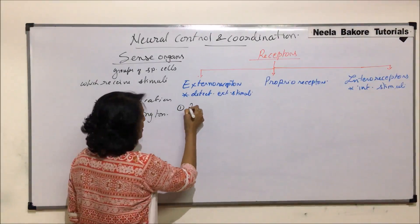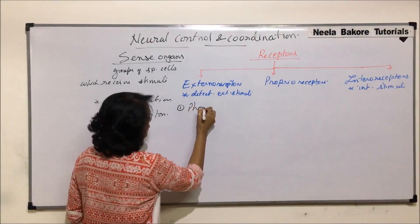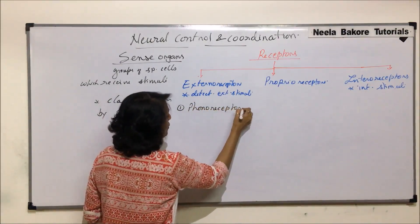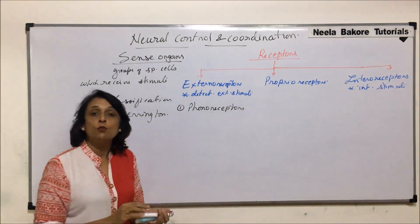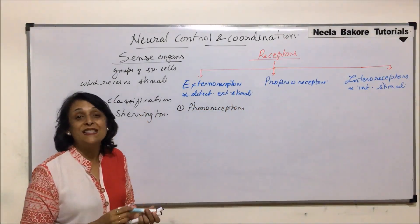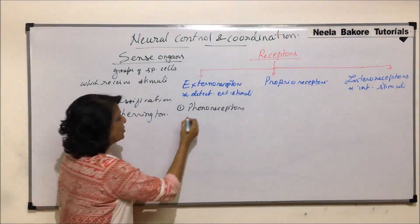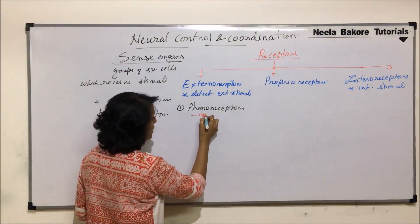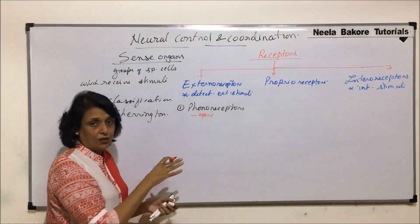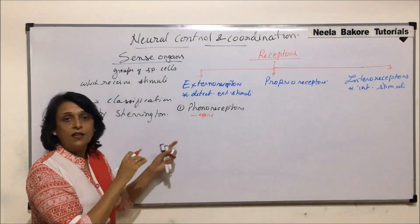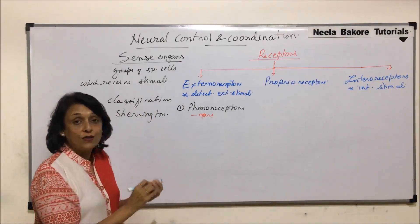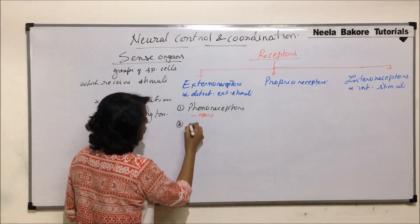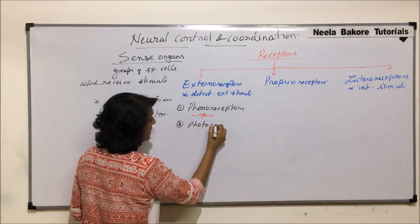The first external receptor type is phonoreceptors. Phonoreceptors are the ones which help us detect sound, so here we would be talking about the ears — the complete structure, inner ear, and all the associated structures.